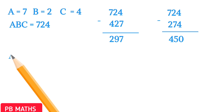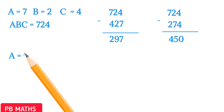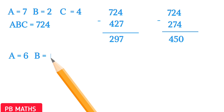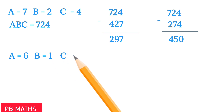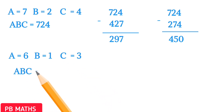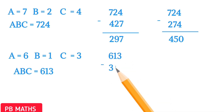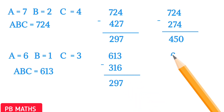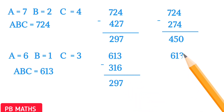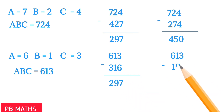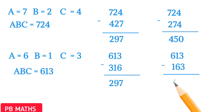In case 4, let's substitute A equals 6. Then B becomes 1 and C becomes 3. So ABC is 613. 613 minus 316 gives 297, and 613 minus 163 gives 450. Case 4 also satisfies the condition.